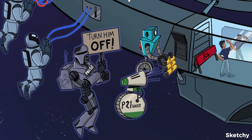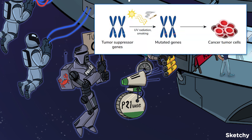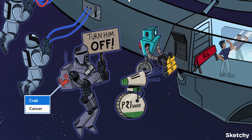Mutations in tumor suppressor genes result in uncontrolled cell proliferation leading to cancer. That means a mutation in the pathway above — for instance, in the P53 gene — can lead to loss of cell cycle regulation.